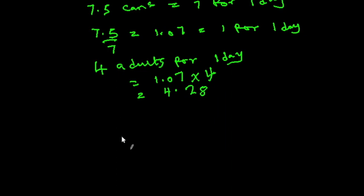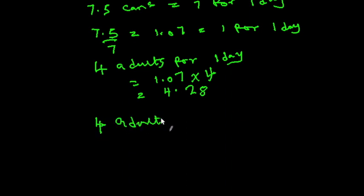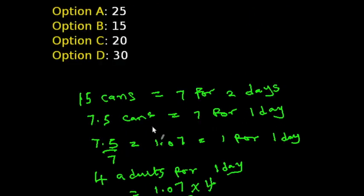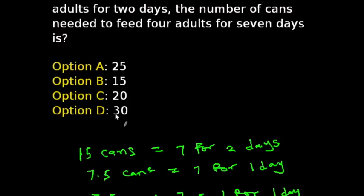Now that we have the number of cans for four adults for one day, we can find the number for four adults for seven days. We multiply 4.28 by 7, which gives us 29.96. Rounding up, we get 30. So the correct answer is option D — 30.